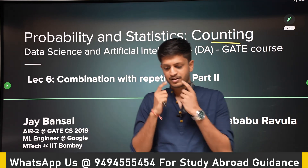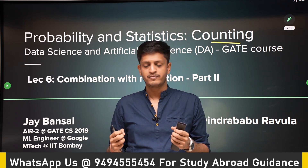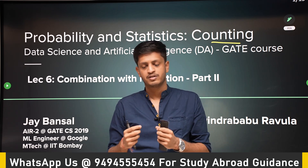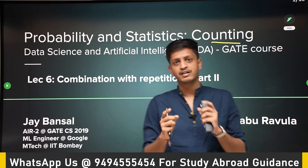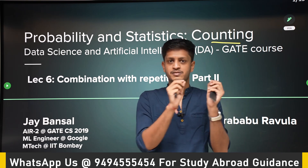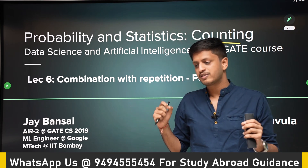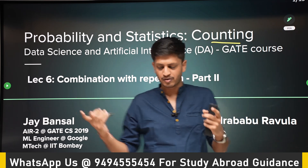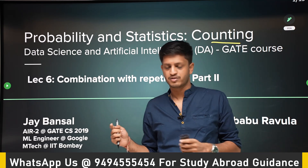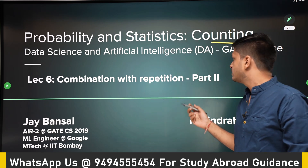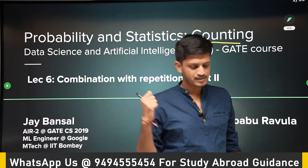We started it in the last class. Whenever we have n objects and we have to pick r at a time and repetition is allowed, it comes under combination with repetition. Remember, combination is selection — arrangement is not important, just the selection. If arrangement matters, it is permutation with repetition, which we will also solve in this lecture.